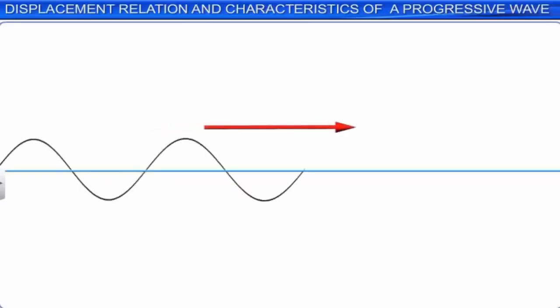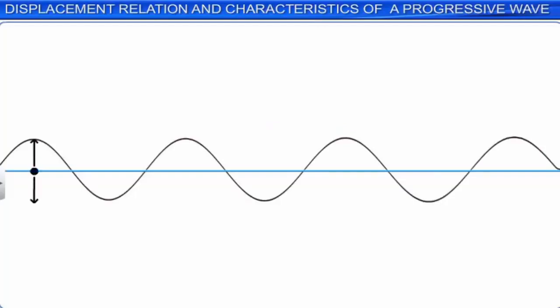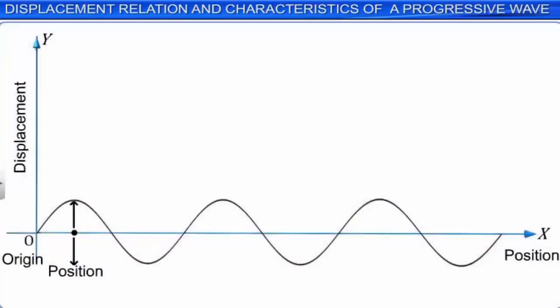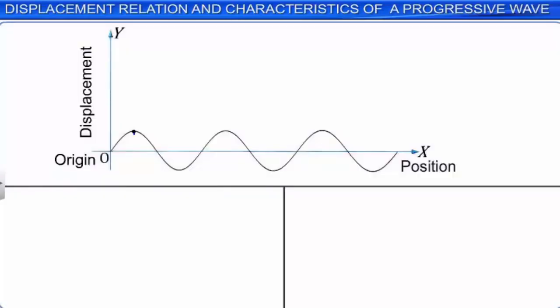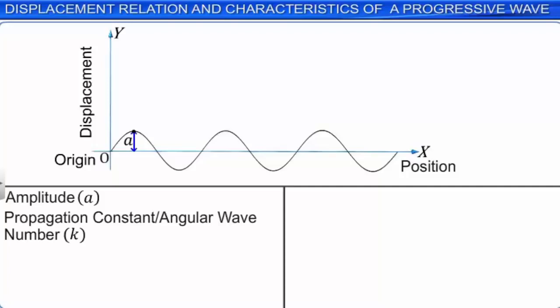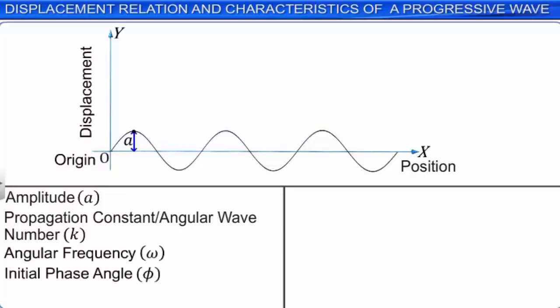During the propagation of a wave through a medium, all the particles of the medium vibrate about a mean position with simple harmonic motion. The displacement of a particle from its mean position at any given time depends on its position with respect to the origin of the wave. This displacement is represented as y(x, t) and is calculated with the help of four parameters: amplitude a, propagation constant or angular wave number k, angular frequency omega, and initial phase angle phi. Using the equation y(x, t) = a sin(kx − ωt + φ), where y is the displacement of the particle in the y direction, x is the x coordinate of the particle, and t is the time lapsed from the origination of the wave.